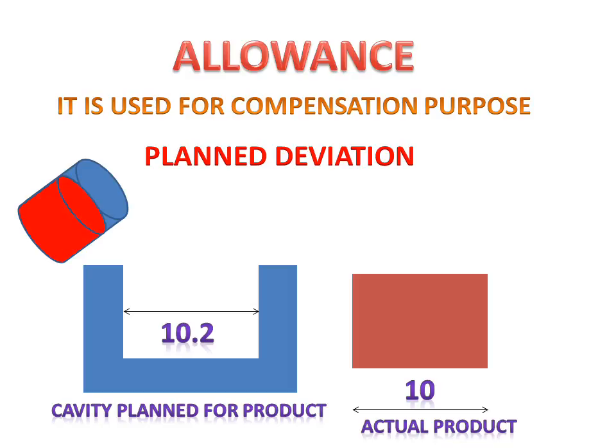This is the difference between tolerance and allowance: tolerance is an unplanned deviation, and allowance is a planned deviation for the actual product. Thank you.